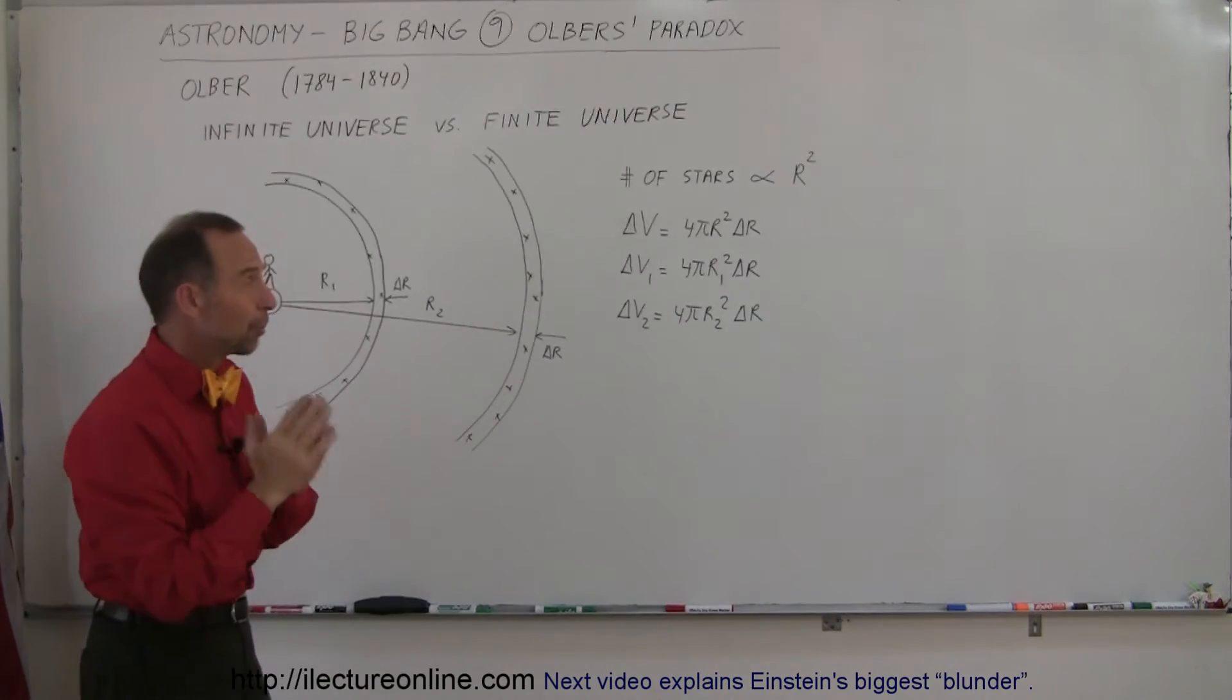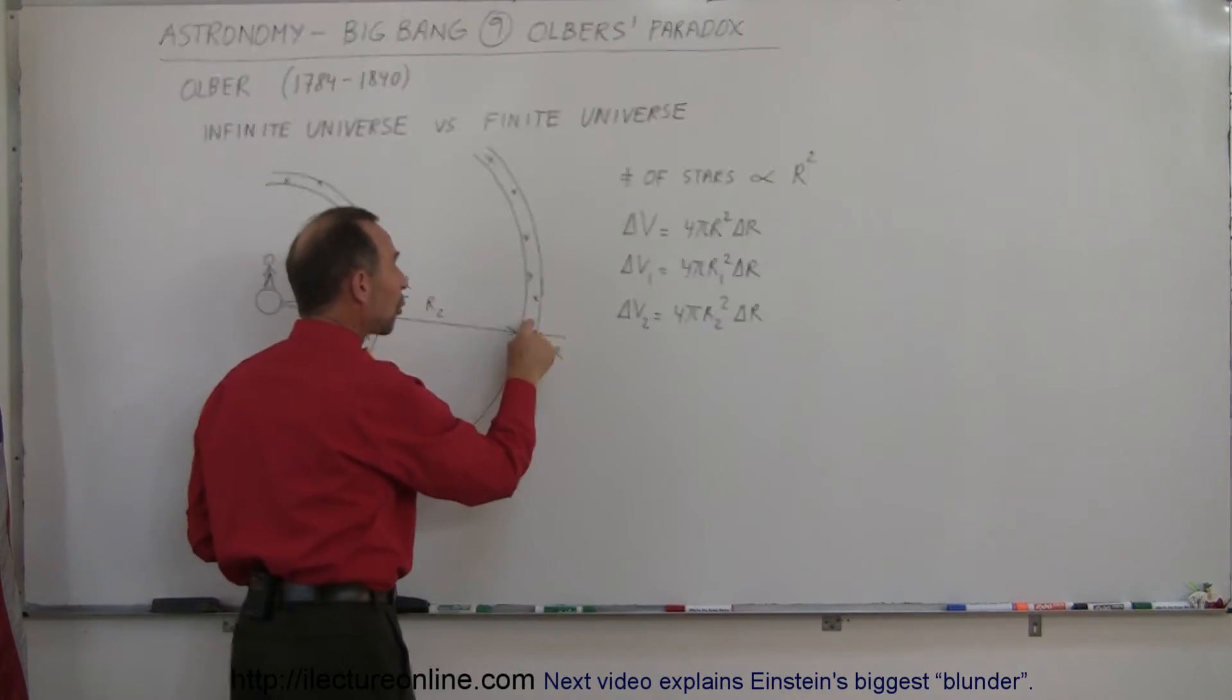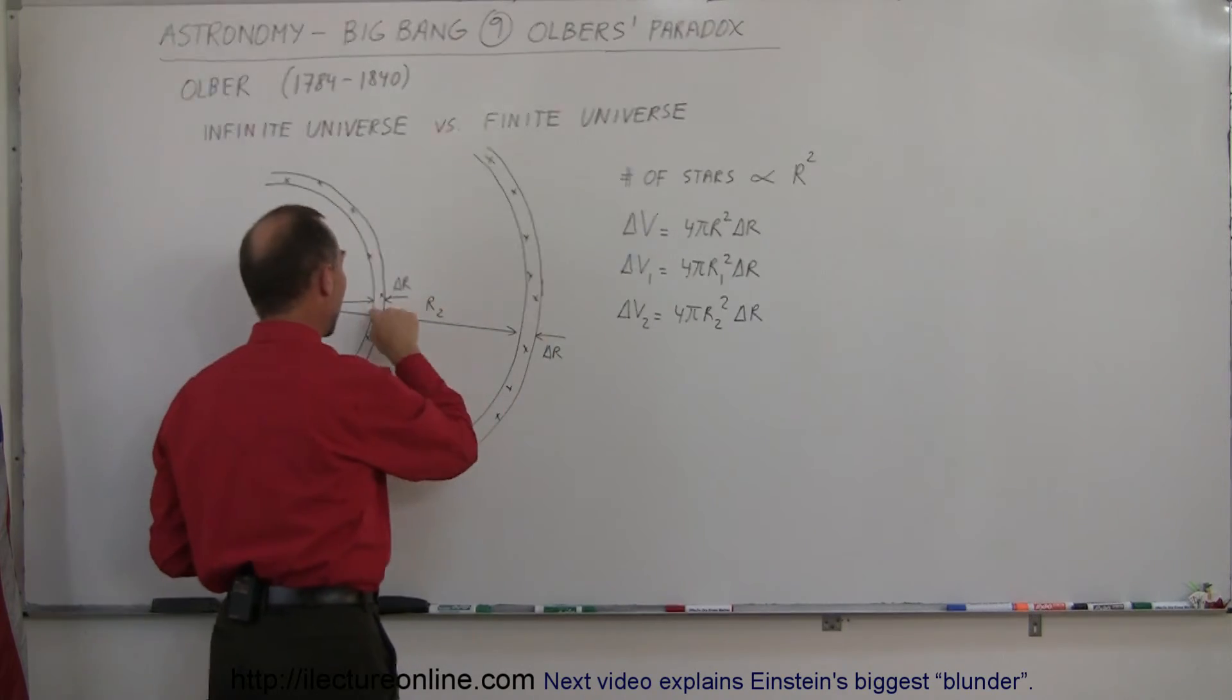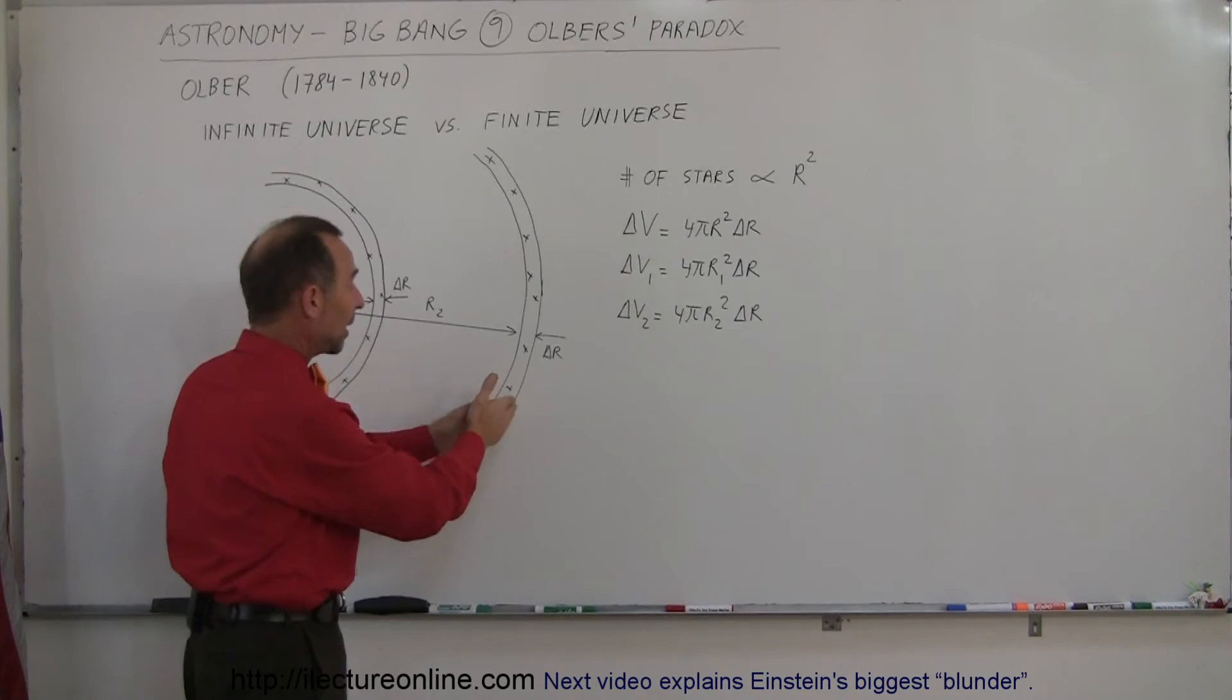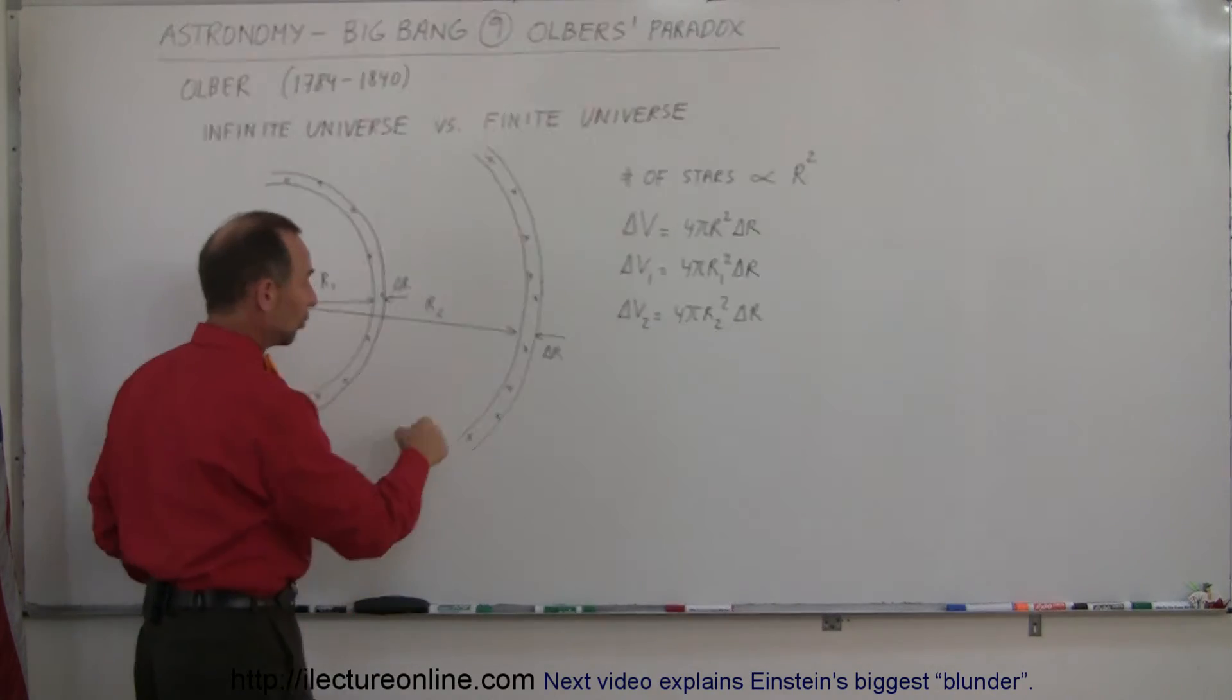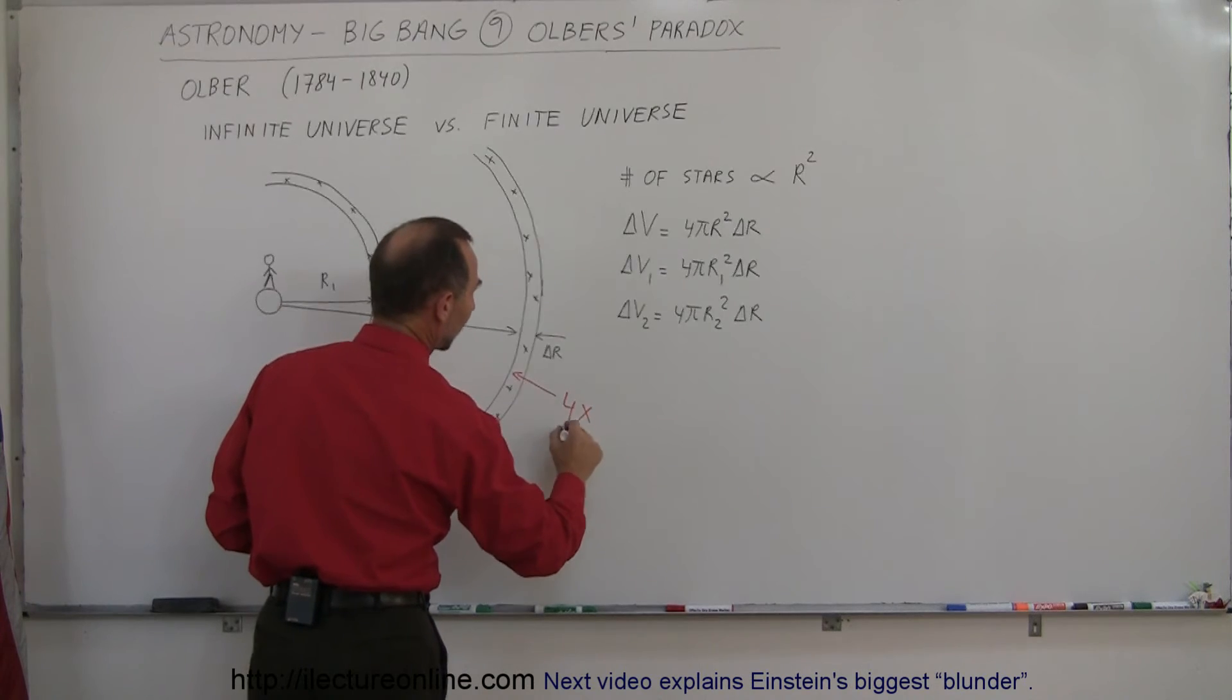But since the volume is proportional to the distance squared, that would mean that there would be four times as many stars here as over there, because two squared is four. That means twice as far away, four times as many stars. So we can say there would be four times as many stars.